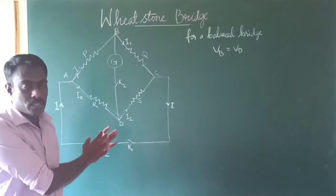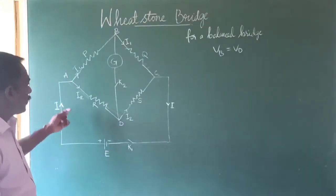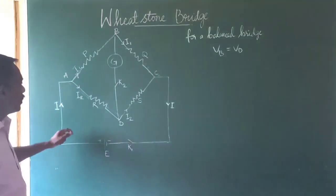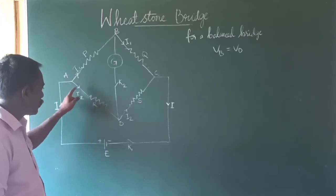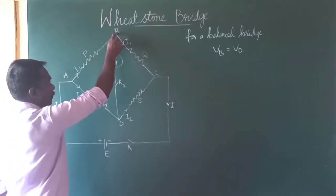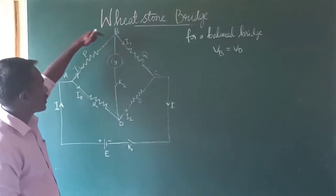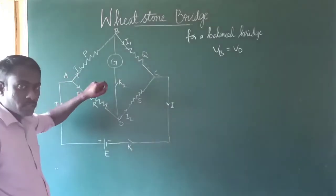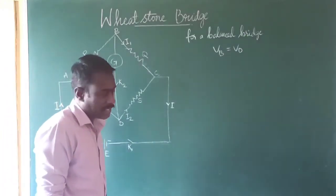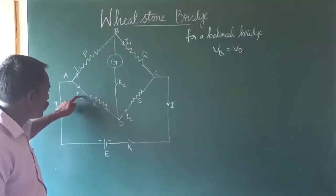In the previous session we learned about Kirchhoff's voltage loop. If we apply Kirchhoff's voltage loop at the loop A, D, B, A — from point A to D the current I2 is flowing through resistor R, and the voltage drop across resistor R can be written as I2 into R. This voltage drop is taken as positive because we are considering the path in the same direction of flow of electric current.